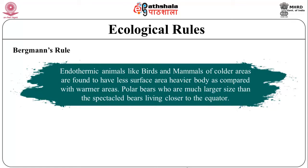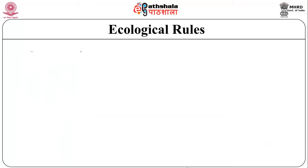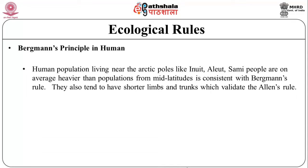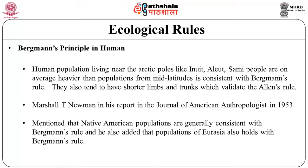Evidence to support this rule can be found in polar bears, which are much larger than spectacled bears living closer to the equator. Penguins living in arctic areas are generally one meter long, compared to the 0.5 meter long penguins of the Galápagos Islands. Human populations living near the Arctic pole, like the Inuit and Sami people, are on average heavier than populations from mid-latitudes, consistent with Bergman's Rule. They also tend to have shorter limbs and trunks, validating Allen's Rule. Marshall T. Newman, in the Journal of American Anthropologist in 1953, noted that Native American and Eurasian populations are generally consistent with Bergman's Rule.